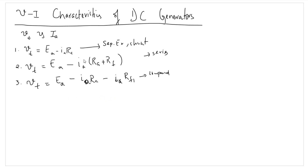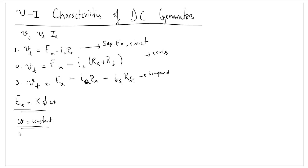For a separately excited and shunt machine we have the same equation. We have already derived that EA equals phi·Z·P divided by 60A, or assuming all other things constant, EA equals K·phi·omega. We will assume that speed is constant and initially also assume that phi is constant. Since omega remains constant and phi is constant initially, EA is a constant DC voltage that is actually generated.